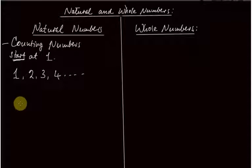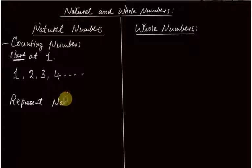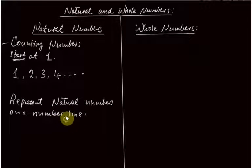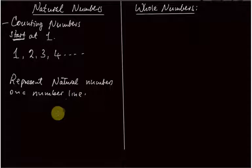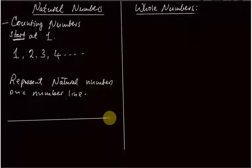These are natural numbers: 1, 2, 3, 4, 5, and so on. Now we can represent these natural numbers on a number line. We are familiar with the number line — it is a horizontal line.